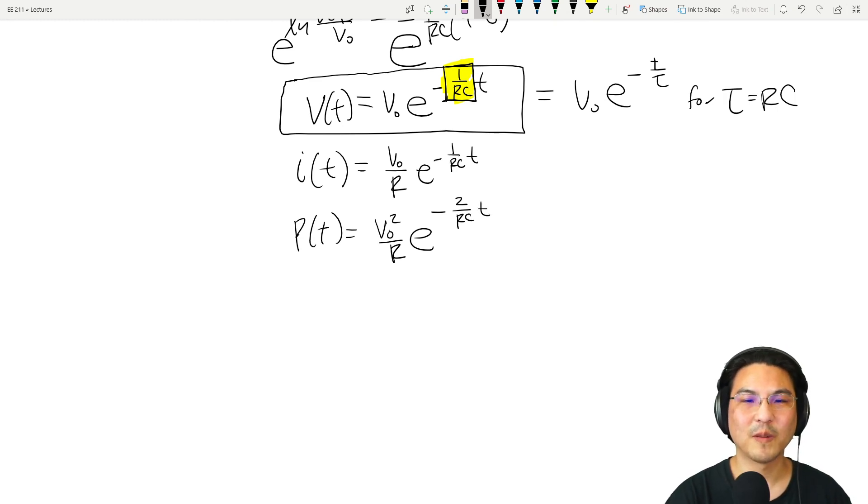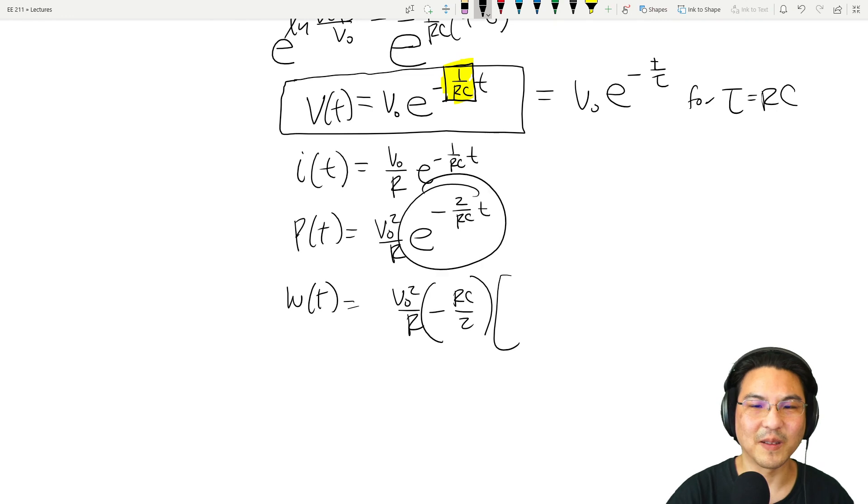What about the energy being absorbed by the resistor? We just integrate the power over time from zero to t. So we got V naught squared over R. And if we integrate this, I need the reciprocal of that: minus RC over two. And then integrate this.